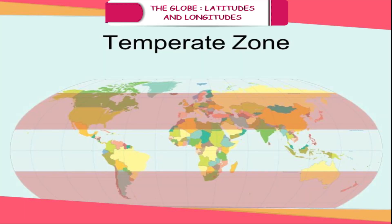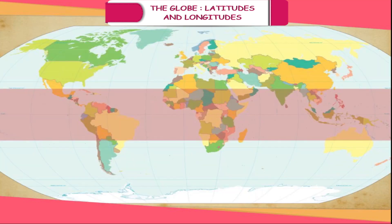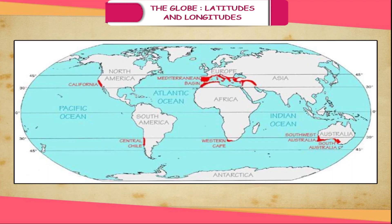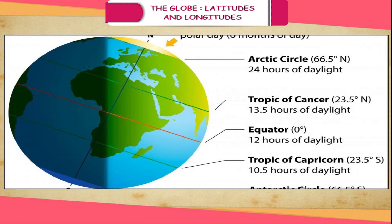The Temperate Zone lies between the Tropic of Cancer and the Arctic Circle in the Northern Hemisphere, and between the Tropic of Capricorn and the Antarctic Circle in the Southern Hemisphere. This zone never receives the vertical rays of the sun, and so it experiences moderate temperature throughout the year. The sun's rays are slanting, reducing the heat and keeping the temperature moderate.